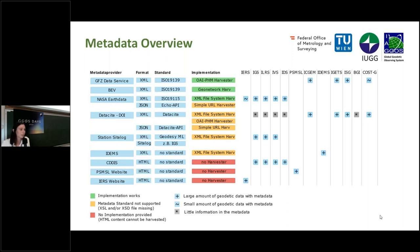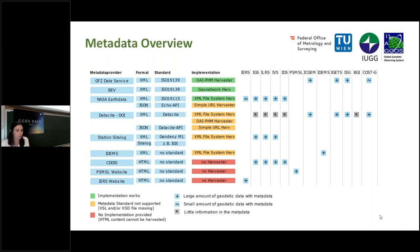Difficulties appeared with non-native formats or missing transformations — for example, the access via DOIs from the DataCite website, or the import of station site logs which are mostly written in GeodesyML, does not work. Metadata have also been found for the PSMSL service and the IES service, but they are only available in HTML format. It would be nice if this metadata could be provided in an XML format instead.